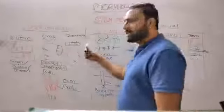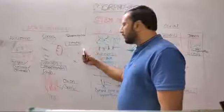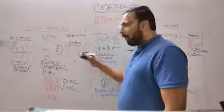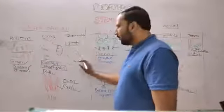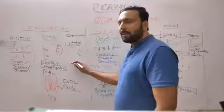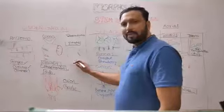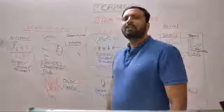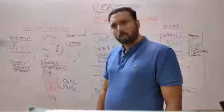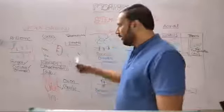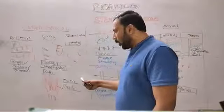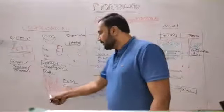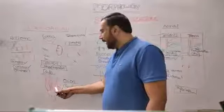In stem tuber, the tips of the branches store food materials and become tuberous. In potato, brown-colored peridermis is present and eye-like structures representing nodes are present. Bulb — example onion and garlic — the stem is reduced into a disc-like structure; the axillary bud forms a daughter bulb and the apical bud forms an aerial shoot.